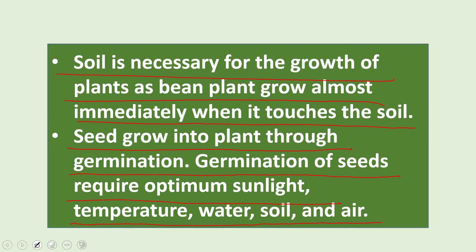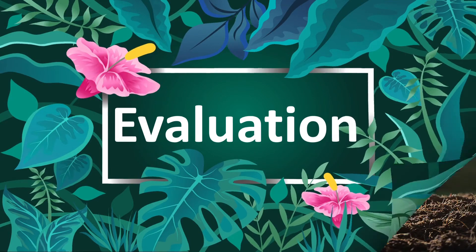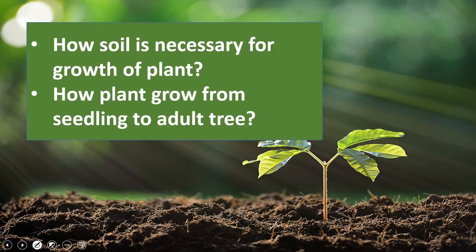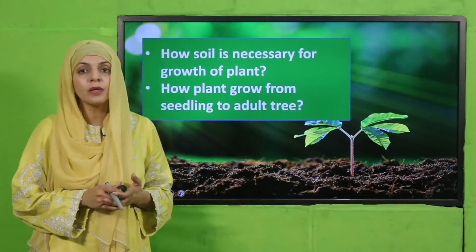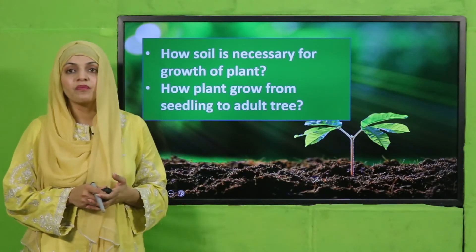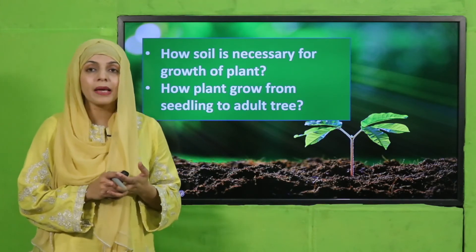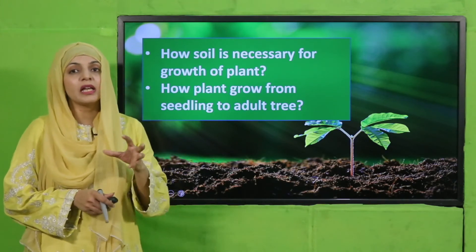You can note down your conclusion in short, in your own words. Now it is time for evaluation. Soil is necessary for plant growth because it provides nutrients and water to the roots. A plant grows from seedling to adult tree when it has sunlight, air, water, soil and temperature.